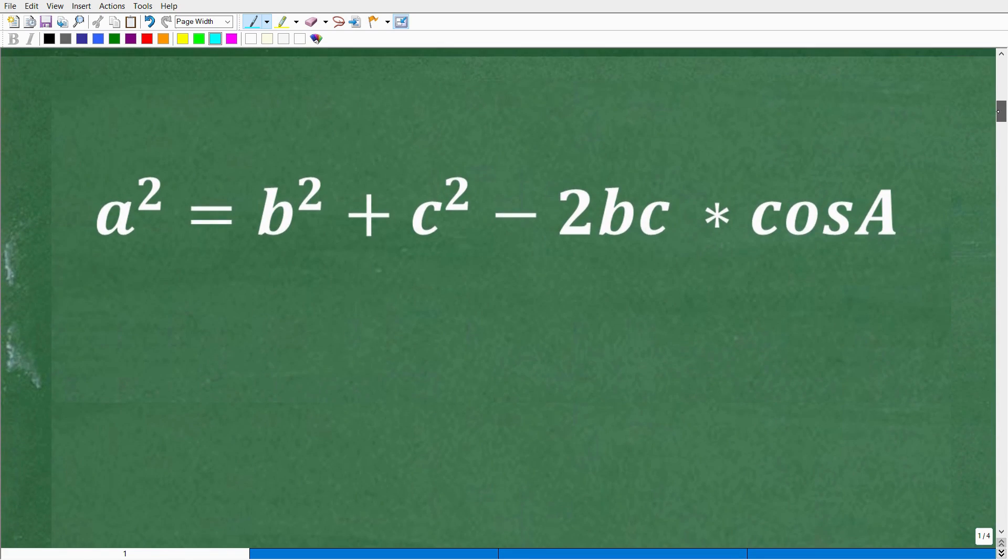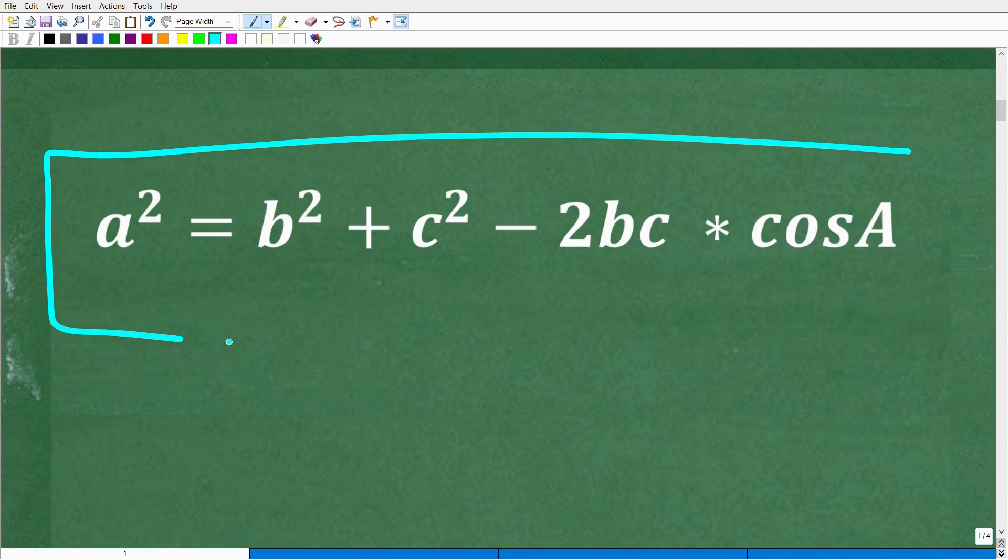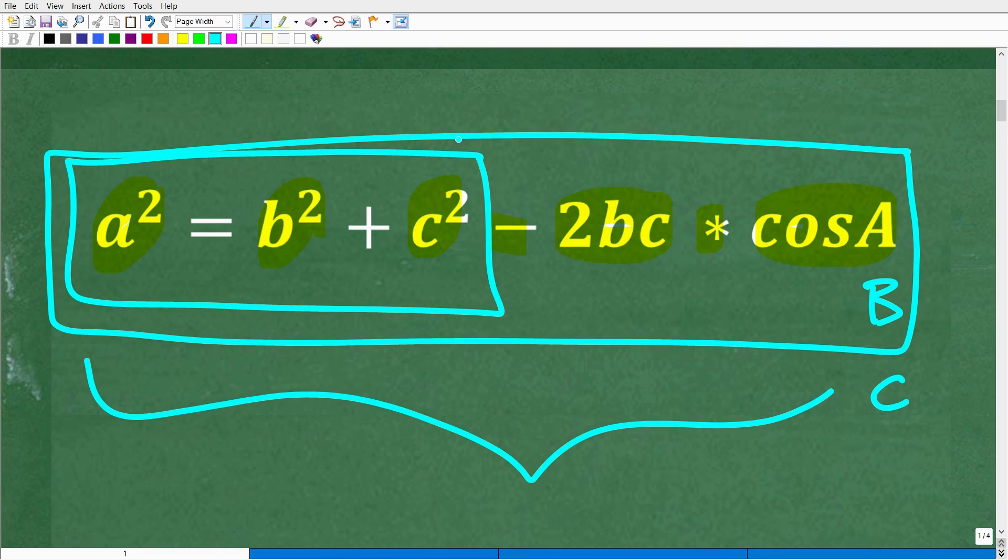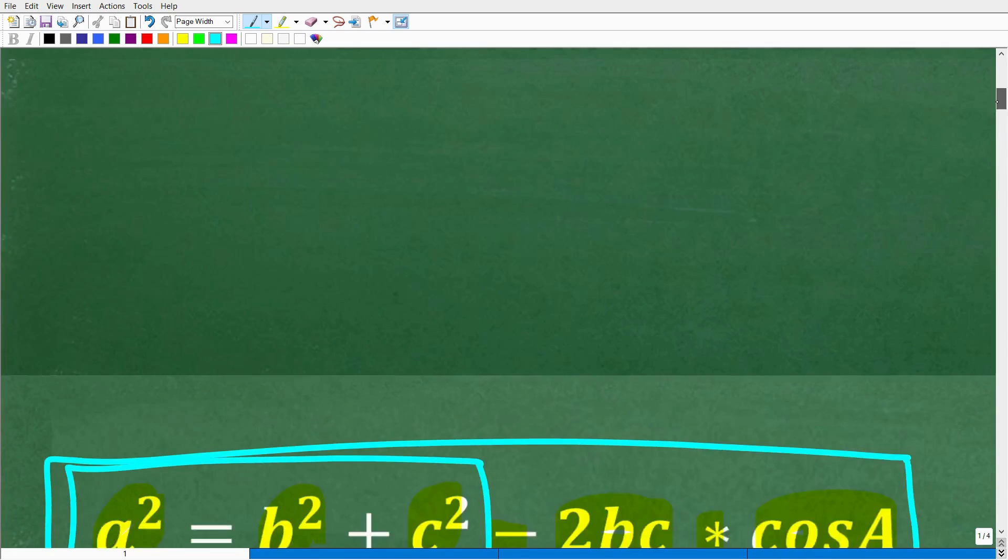Let me show you the law of cosines. There's different versions but this is basically one of them: a squared equals b squared plus c squared minus 2bc times cosine A. There's a version for cosine B and cosine C where these variables would change. If you look here, it looks pretty similar to the Pythagorean theorem. Actually, the Pythagorean theorem is a special case scenario for the law of cosines.